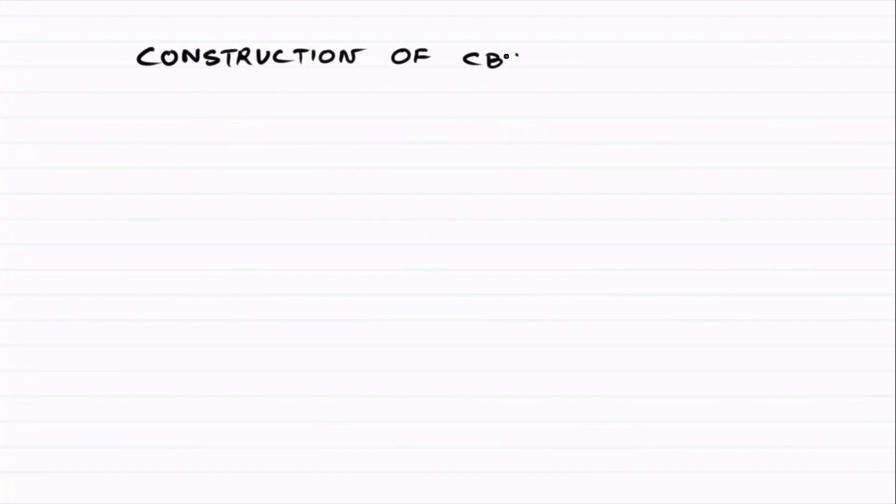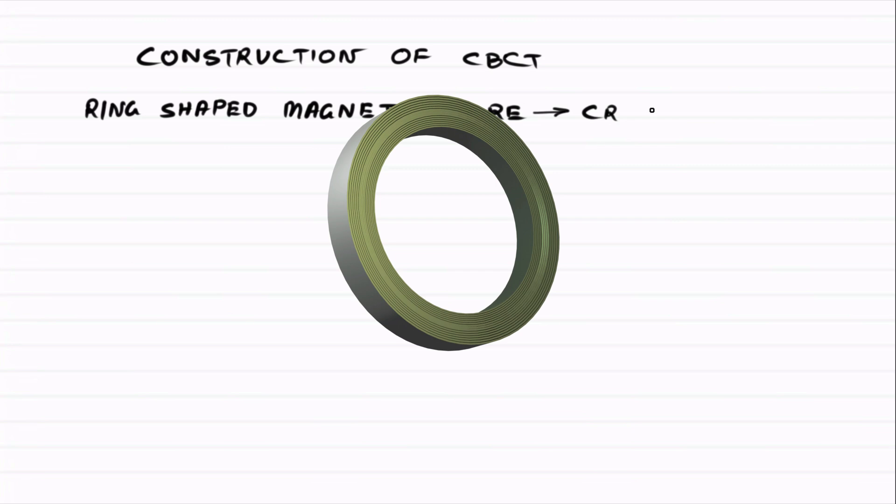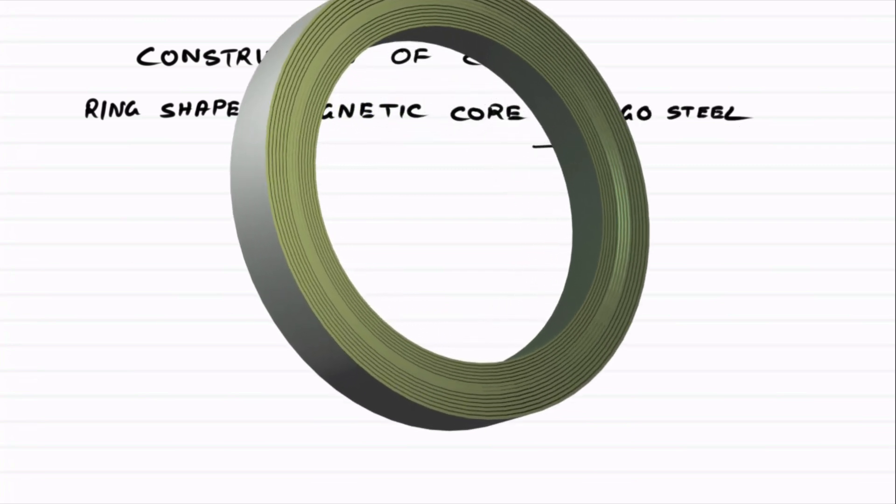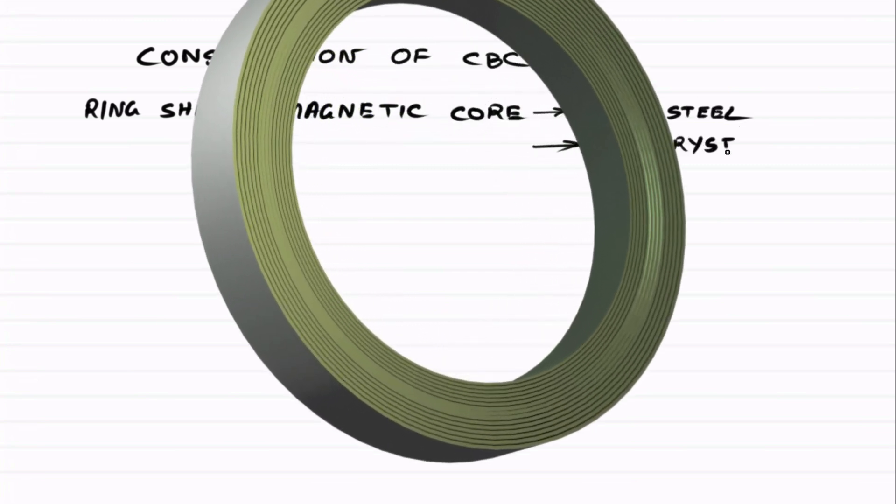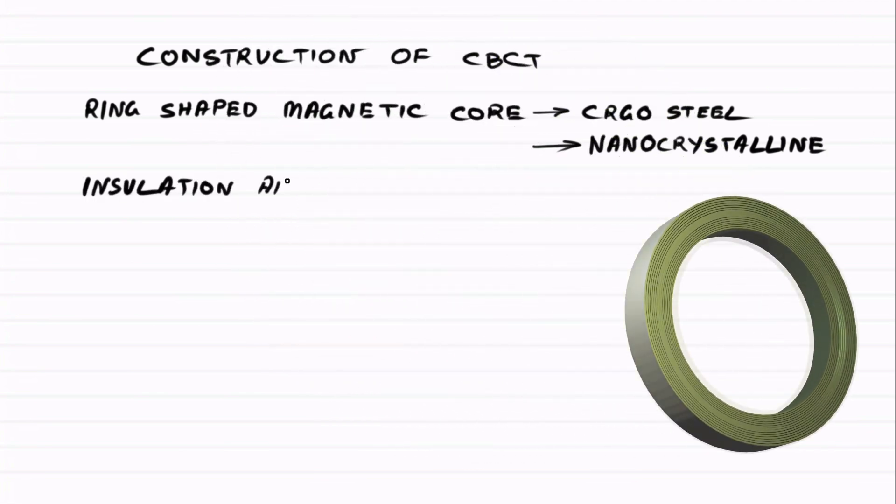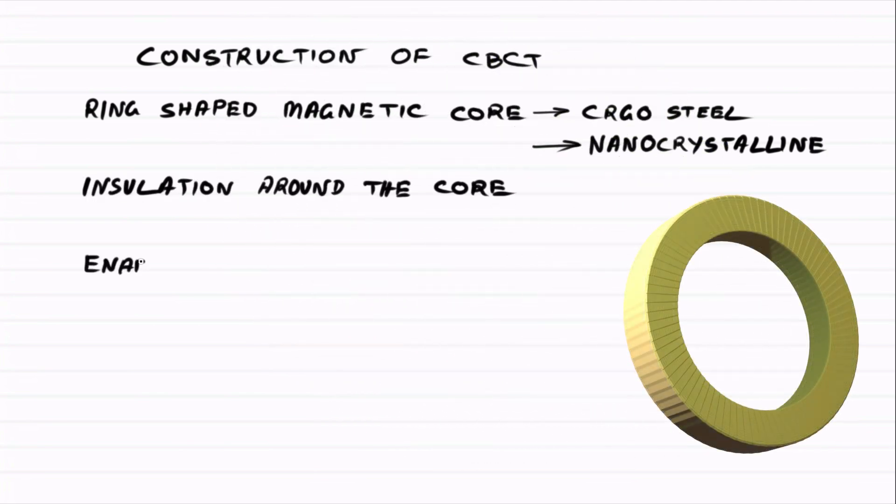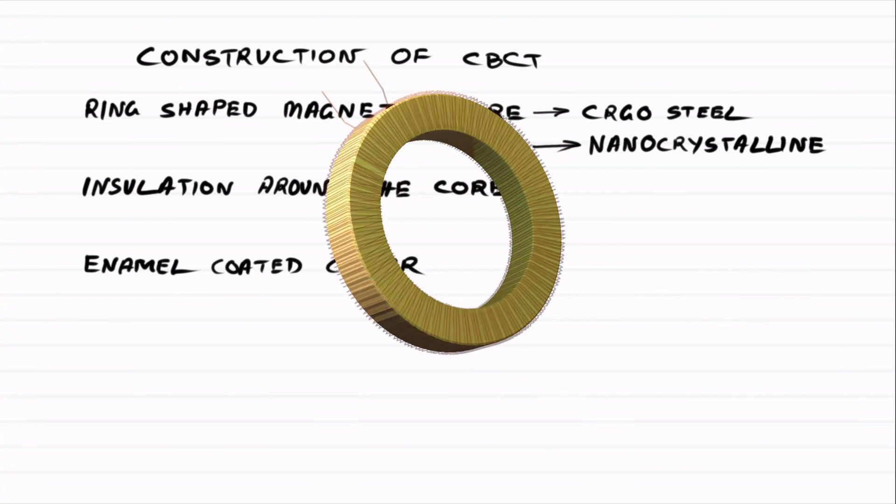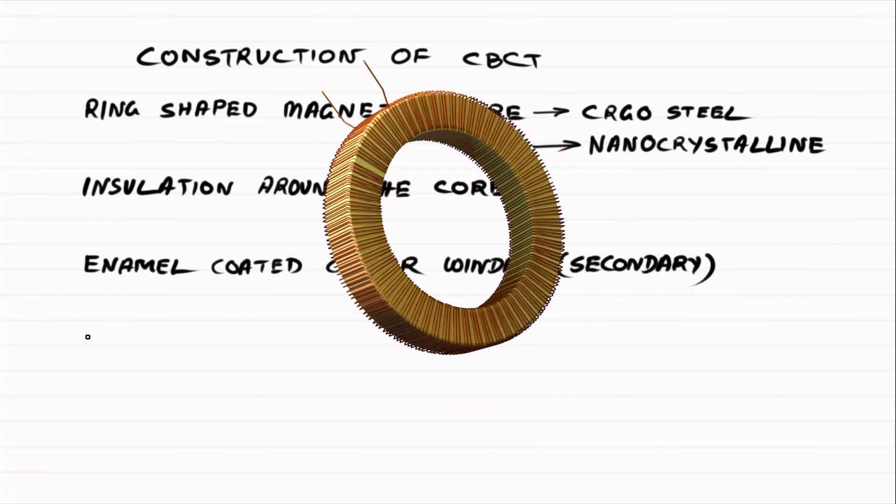Construction. The core of a CBCT is ring-shaped. Manufacturers generally use cold-rolled, grain-oriented steel laminations or sometimes nano-crystalline material. They insulate the core with paper or similar insulation.